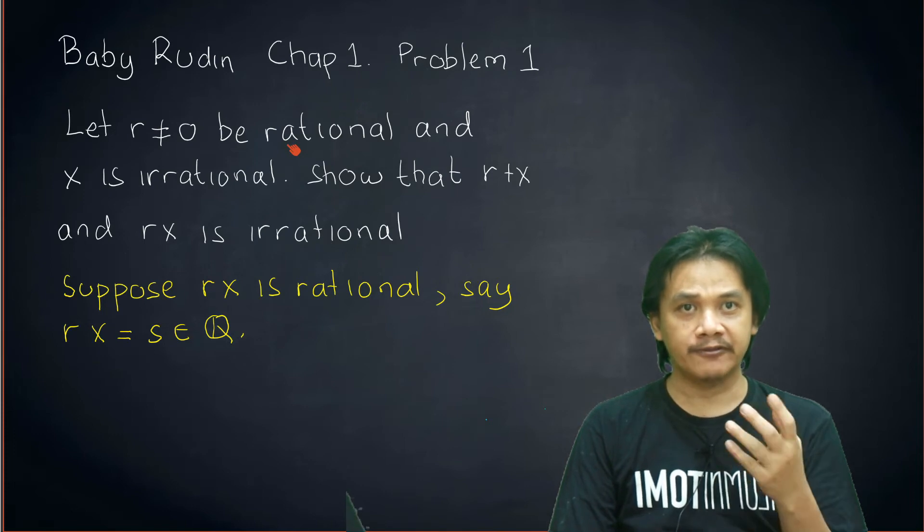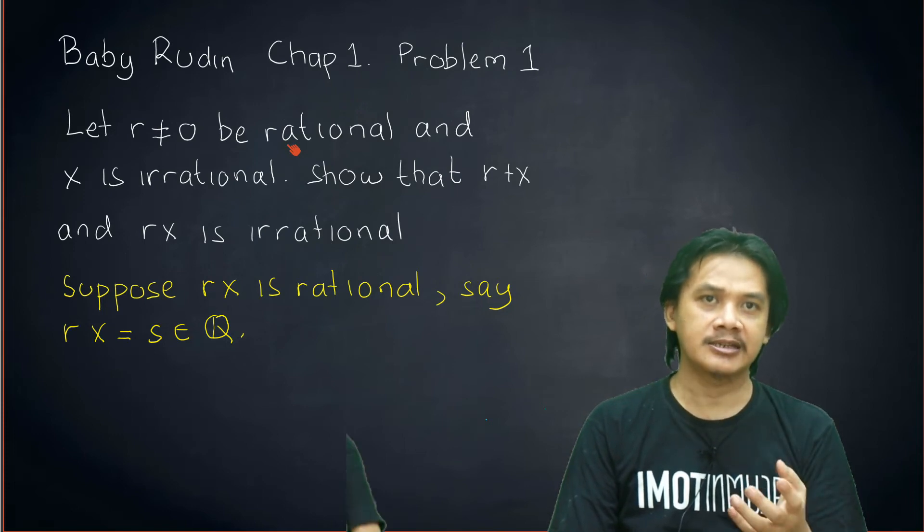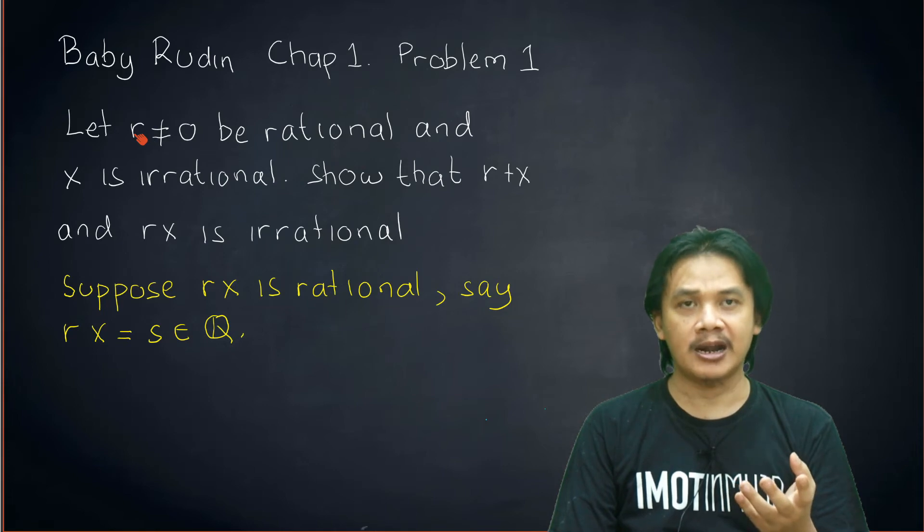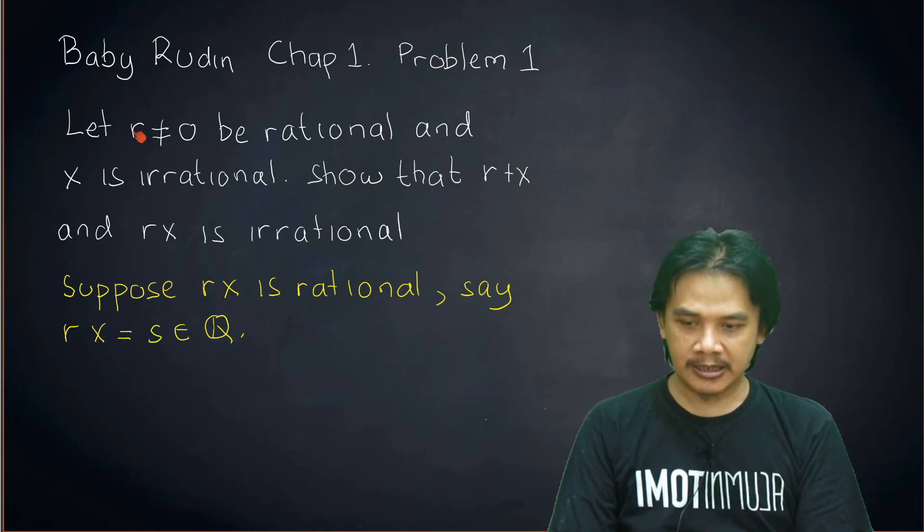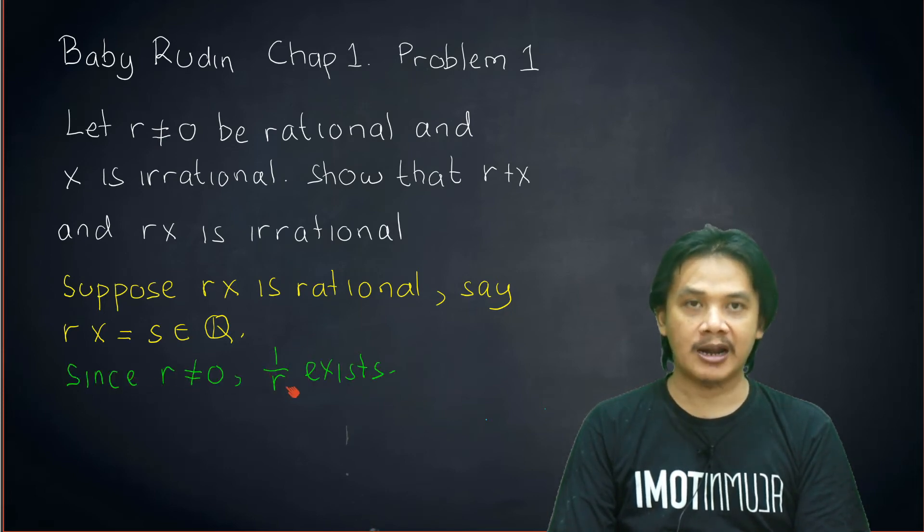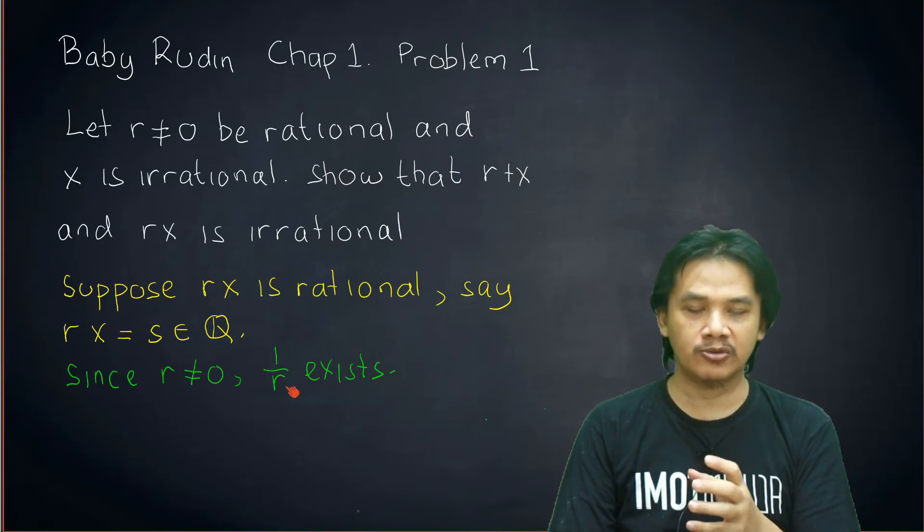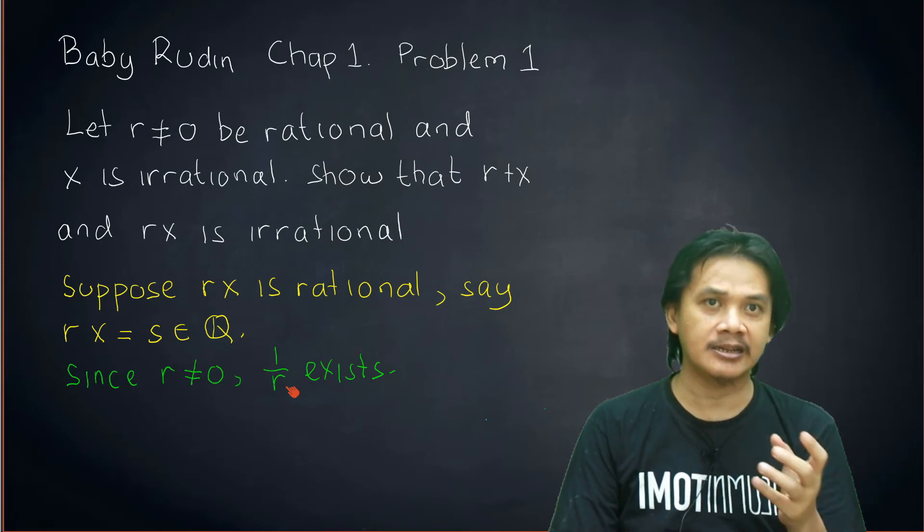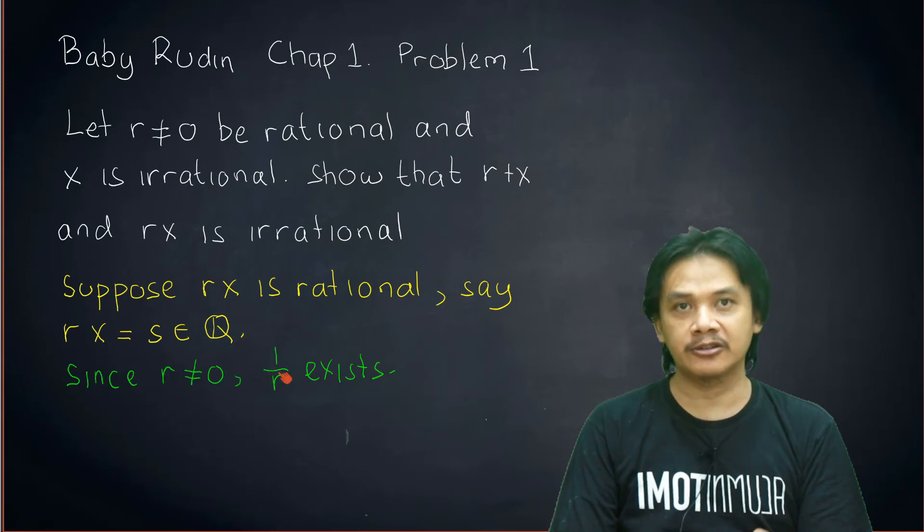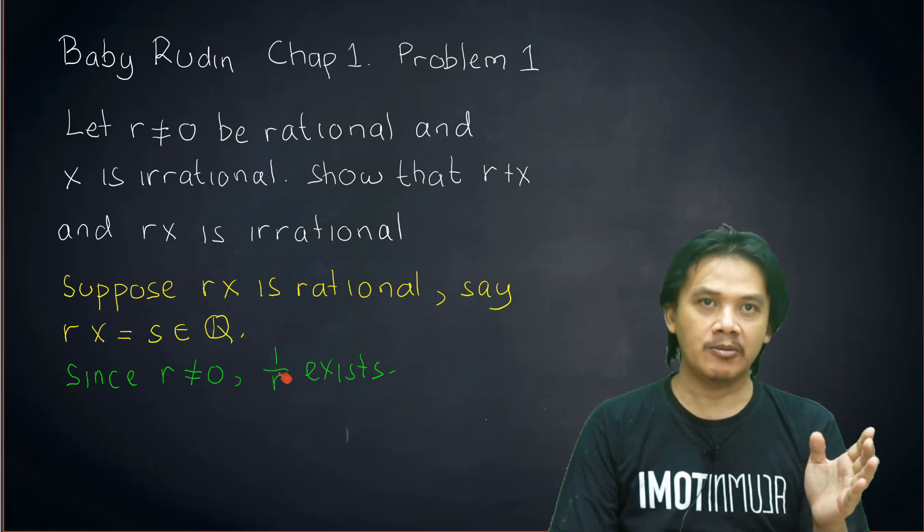Since it is a field, then every non-zero element has an inverse. And the inverse of r is usually written as 1/r in Rudin's book. So since r is non-zero, there exists this 1/r. This 1/r is a special element related to r which is the inverse under multiplication. Which means that if we multiply this r with 1/r, either to the left or to the right, we will get 1.